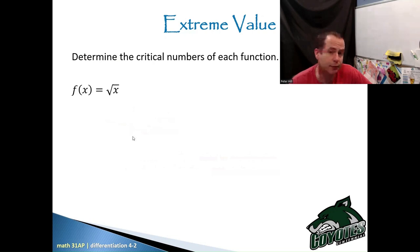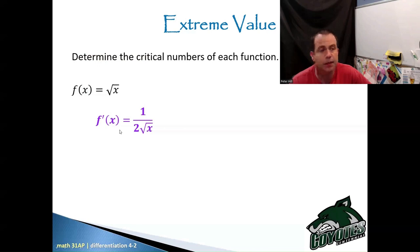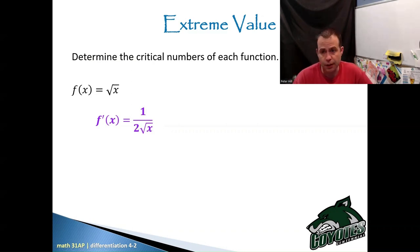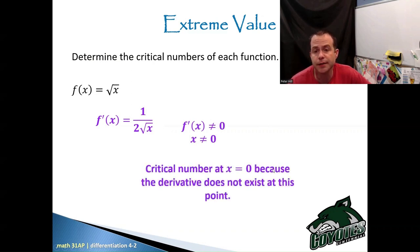For the square root of x, the derivative is one-half x to the negative one-half, which is 1 over 2 root x. I know I have an NPV at x equals 0 because I can't have 0 in the denominator. So I know that's a critical number. Is there any spot where this derivative can equal 0? The answer is no. So I have a critical number at x equals 0 because the derivative does not exist at that point.